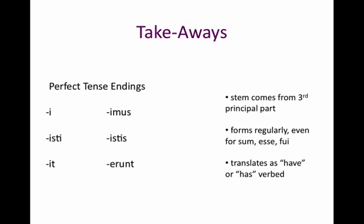So our takeaways from this lesson: you need to memorize your perfect tense endings, which are i, isti, it, imus, istis, erunt. You also have to know how to translate these. Remember, the stem for these endings comes from the third principal part — you drop off your 'i' and it forms regularly with these endings, even for the verb sum, essay, phooey, which is our normally irregular verb 'to be.' When translating, use 'have' or 'has' plus whatever the verb means — so 'have or has flown,' 'have or has ran.' We could also translate it with just the '-ed' form of the verb, but I would prefer that you use 'have' or 'has' when translating the perfect tense.